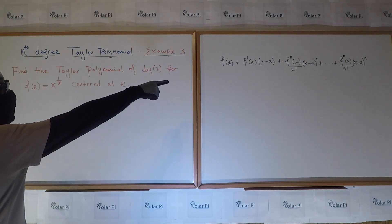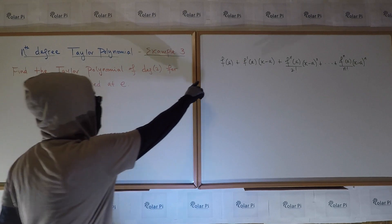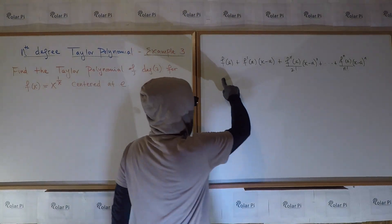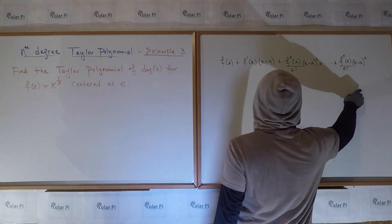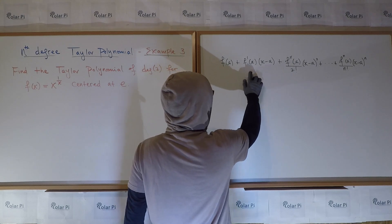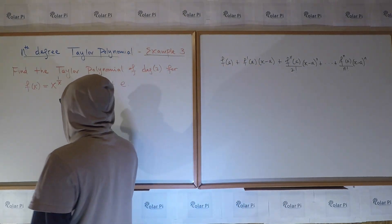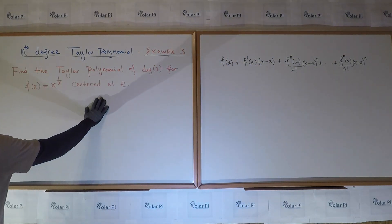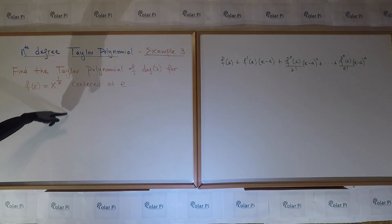Now, if you look at what I have on the right side, we see that the nth degree Taylor is like this. So for the second degree Taylor, we need this fella, this fella, and that fella. Our center A here is e. So basically we need to get the first and second derivatives for this function.